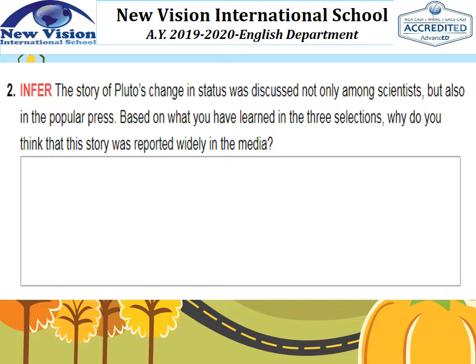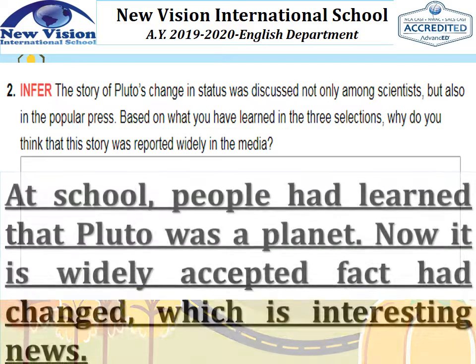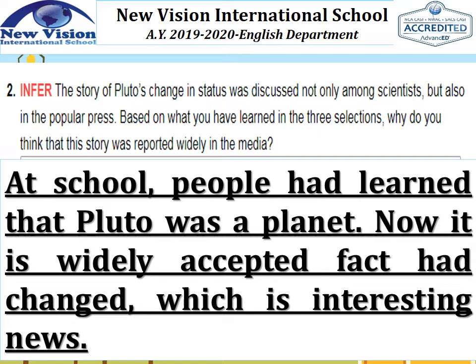For number two, infer: the story of Pluto's change in status was discussed not only among scientists but also in the popular press, the media, the news. Based on what you have learned in the three selections, why do you think this story was reported widely in the media? It could be that at school, people had learned that Pluto was a planet. Now, that widely accepted fact had changed, which is interesting news. People may have felt sad for tiny Pluto the way we feel sad when any underdog is defeated.